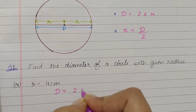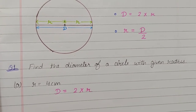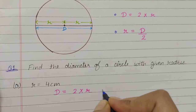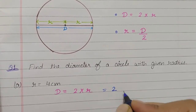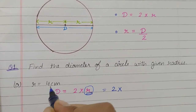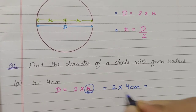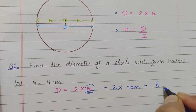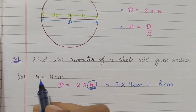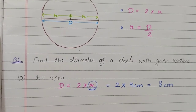We are going to use this formula because here we have to find the diameter only. Diameter is equal to two times of radius. Now, simply put the value of r — two multiplied by four centimeter — and you will get eight centimeter. So, the diameter of a circle with the given radius is eight centimeter.